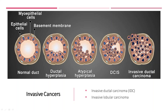Secondly, we have DCIS, which stands for ductal carcinoma in situ. Since it is still in situ, it has not invaded the basement membrane yet. Remember that DCIS is considered a premalignant lesion, while atypical hyperplasia and lobular carcinoma in situ are not considered premalignant lesions, but rather markers for high risk of developing breast cancer.